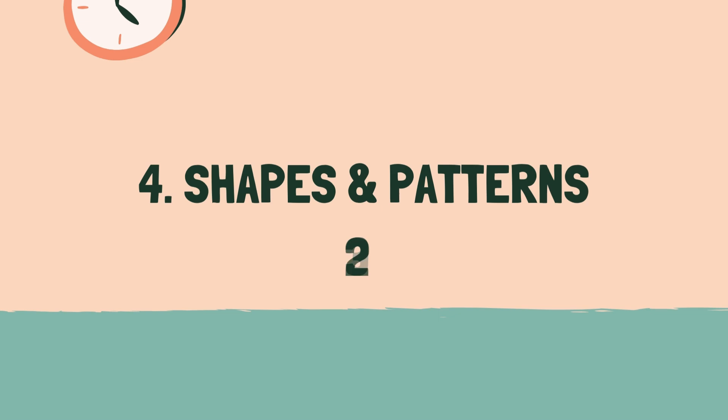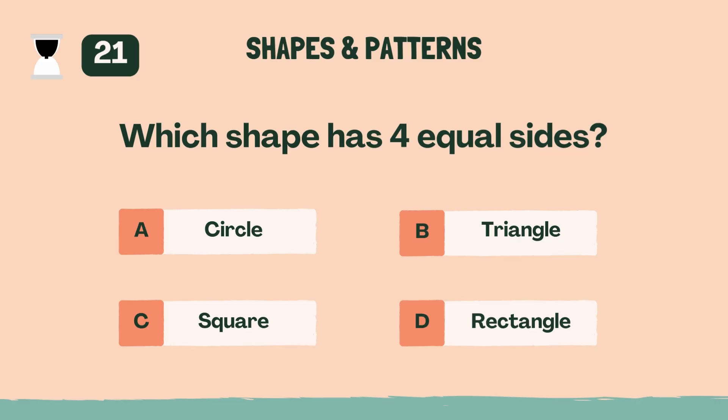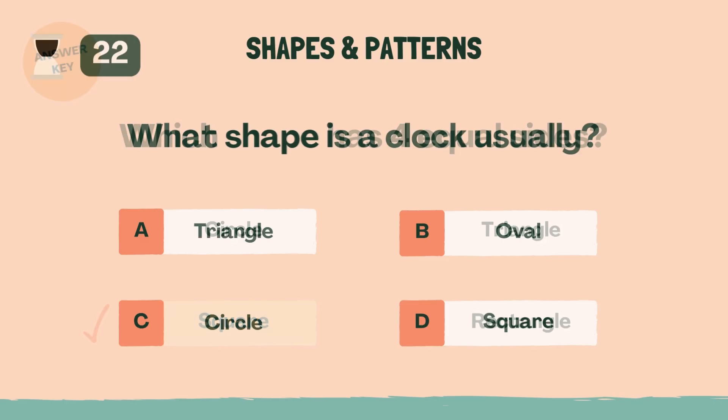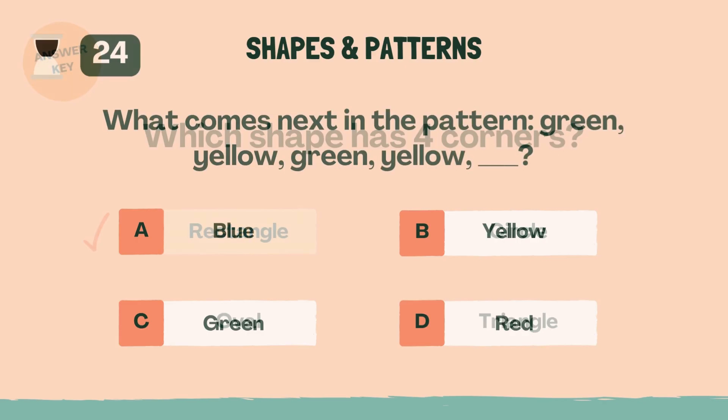Which shape has four equal sides? C, square. What shape is a clock usually? C, circle. Which shape has four corners? A, rectangle. What comes next in the pattern green yellow green yellow? C, green.